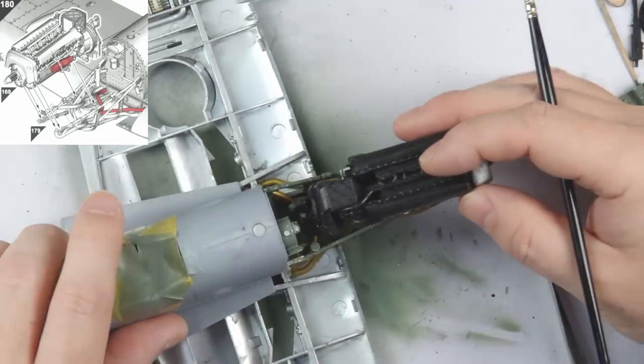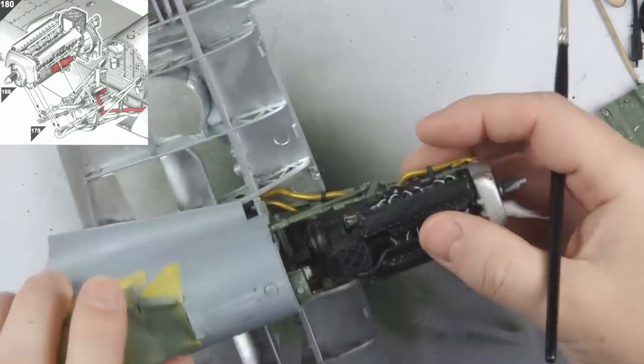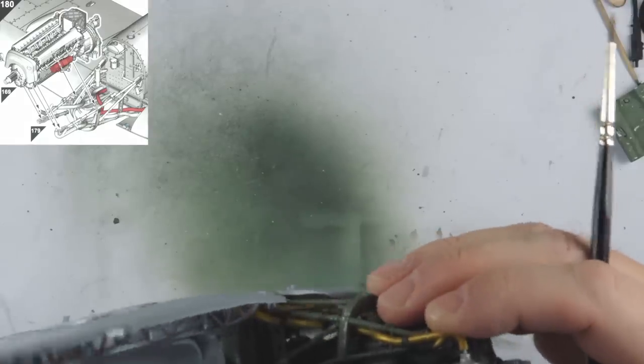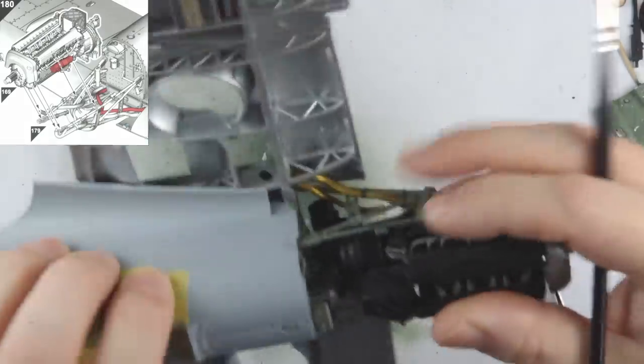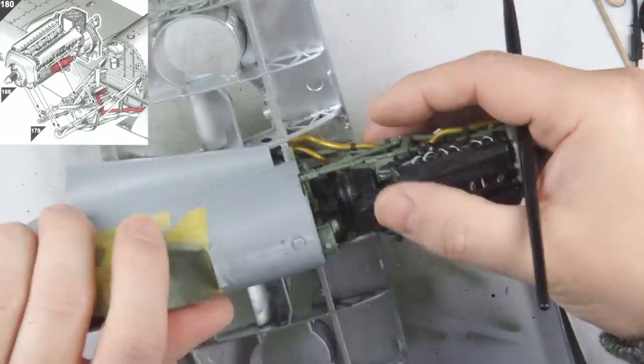Step 180 brings the engine in, which fits best, sliding the supercharger through first and then locating the cooling pipes into the header tank. The actual engine mounts sit flawlessly if you do this.